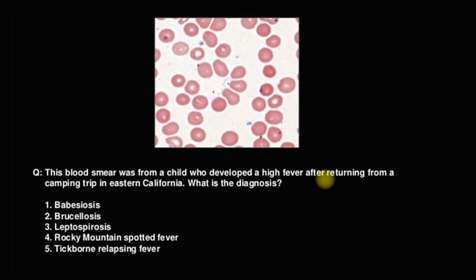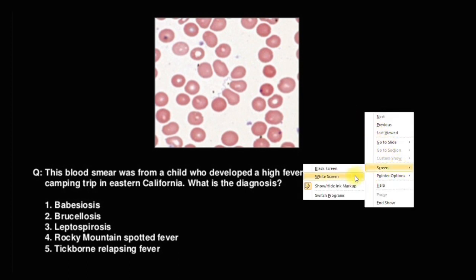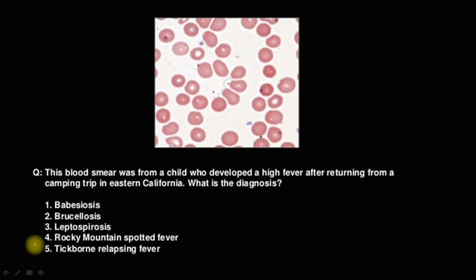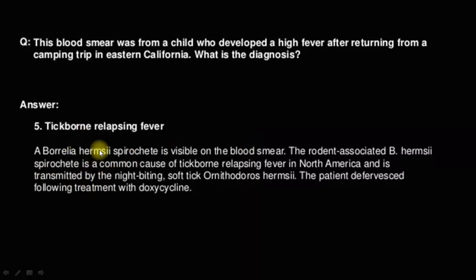This is a blood smear of a child who developed high fever after returning from a camping trip in California. What is the diagnosis? Option 1 is babesiosis, Option 2 is brucellosis, Option 3 is leptospirosis, Option 4 is Rocky Mountain spotted fever, Option 5 is tick-borne relapsing fever. The answer is tick-borne relapsing fever. This is a picture of Borrelia hermsii — a spirochete visible on the blood smear, associated with the common cause of tick-borne relapsing fever in North America, transmitted by the soft tick. Treatment is doxycycline.